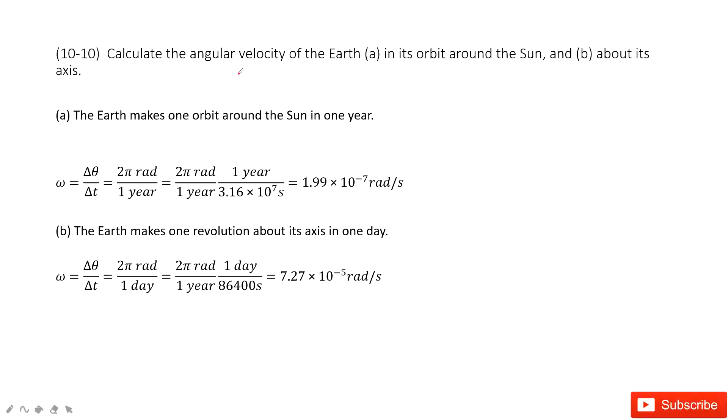At this one, you can see we need to find the angular velocity of the Earth in its orbit around the sun. That is, of course, the Earth makes one complete rotation around the sun in one year. Do you agree?